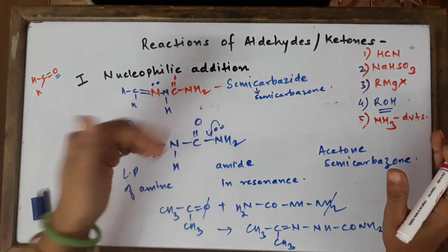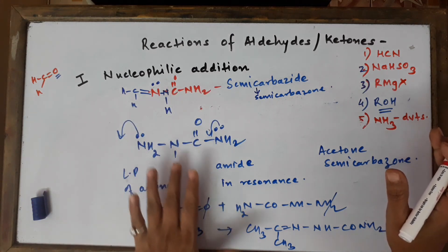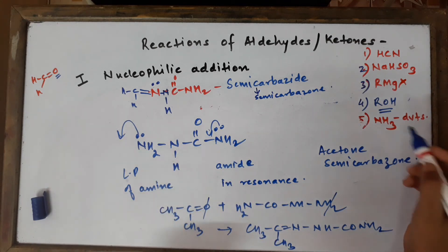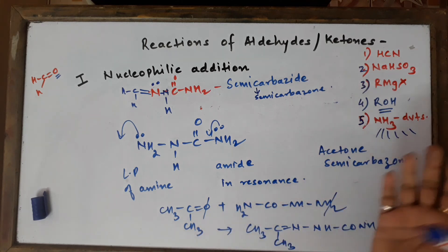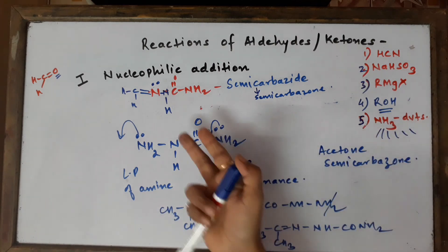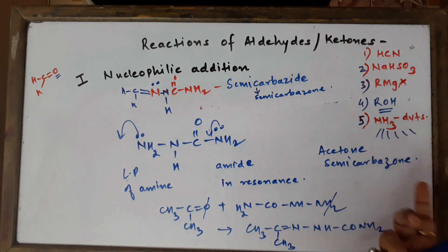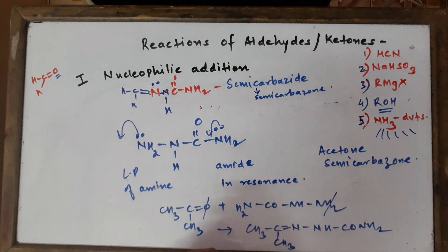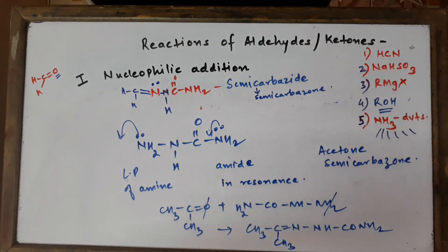Remember: the formula must be learned thoroughly. Semicarbazide is a derivative of hydrazine - take NH2-NH2 and attach CO-NH2. So we have discussed five to six derivatives of ammonia: primary amine, hydroxylamine, hydrazine, 2,4-dinitrophenylhydrazine, phenylhydrazine, and semicarbazide. Keep revising these topics, because organic chemistry is a vast branch. Solve the NCERT textbook exercises and practice regularly to build proficiency and confidence. I'll talk about more reactions in my next class.